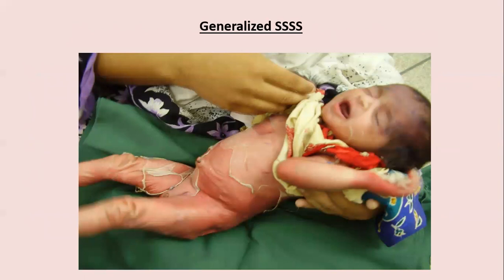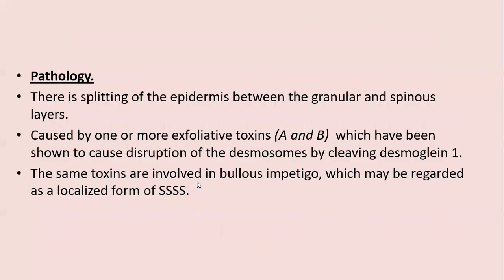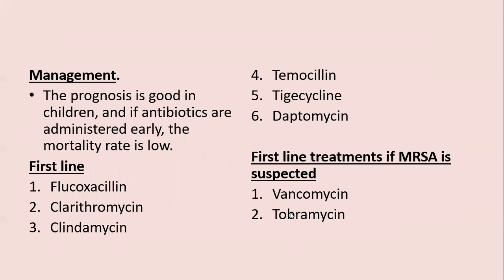This shows the peeling of skin in SSSS and localized SSSS in adults. There is splitting of the epidermis between the granular and spinous layer, caused by exfoliative toxins A and B, which cause disruption of desmosomes by cleaving desmoglein-1. The same toxins are involved in bullous impetigo, which may be regarded as a localized form of SSSS. Management: prognosis is good in children if antibiotics are administered early; mortality is low. First-line antibiotics include flucloxacillin, clarithromycin, clindamycin, ticarcillin, tigecycline, and daptomycin; if MRSA is suspected, vancomycin or teicoplanin.